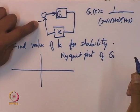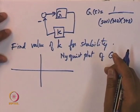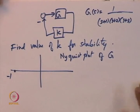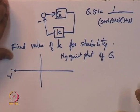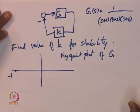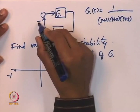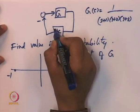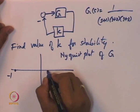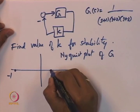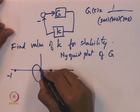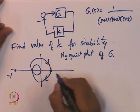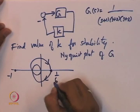From the Nyquist plot we can determine, even if the system is stable for unity gain, for what value of gain in the feedback path it will become unstable. It is only the loop gain that matters. The Nyquist plot roughly starts at 1/6 at omega equals zero, then comes closer to the origin as the magnitude falls and the phase decreases from 0 to minus 270 degrees.